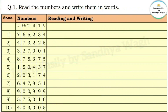Question one: read the numbers and write them in words. We need to read the given numbers and write them in words. To do this, first we need to look at the places of each digit in the number. So the number is 7,65,234. Let's first check what place each digit of this number is at.